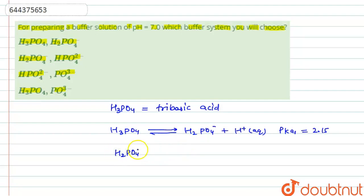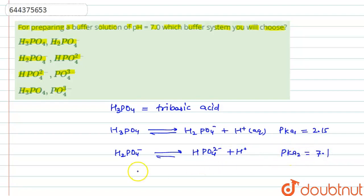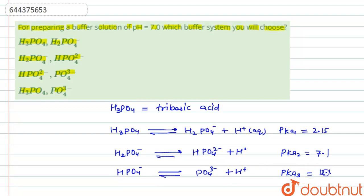Again, H2PO4⁻ dissociates into HPO4²⁻ plus H⁺, and the pKa2 value for this step is approximately 7. The pKa3 value is 12.5. Now we have to determine the correct buffer solution.